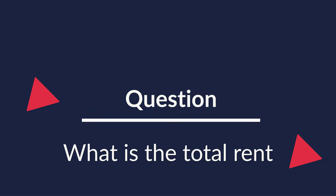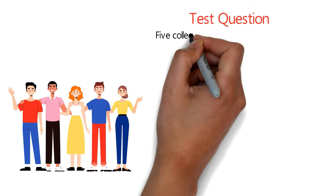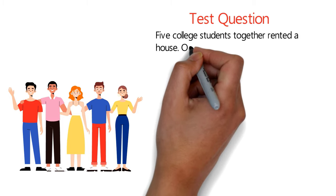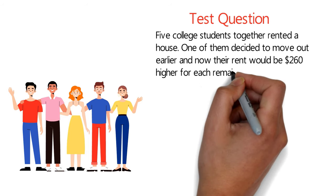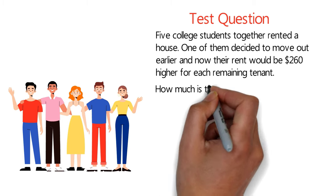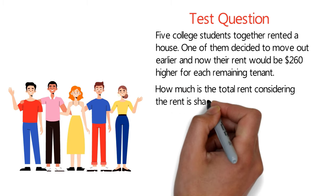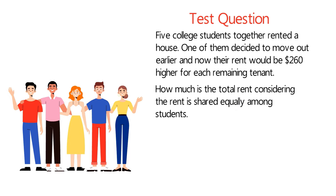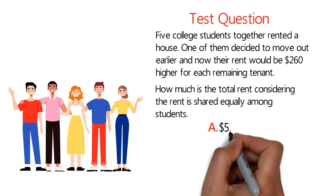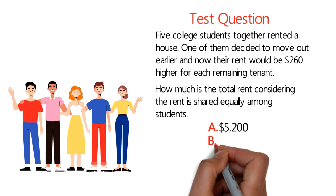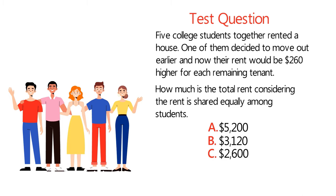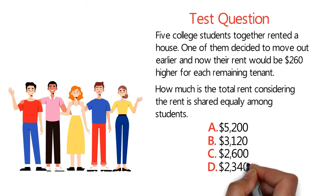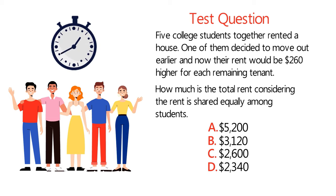Here's an interesting question you may need for the test, or even if you're trying to rent a house. Five college students together rented a house. One decided to move out earlier, and now the rent is $260 higher for each remaining tenant. What is the total rent, considering it is shared equally? Choices: A) $5,200, B) $3,120, C) $2,600, and D) $2,340. Give yourself 20 to 30 seconds.